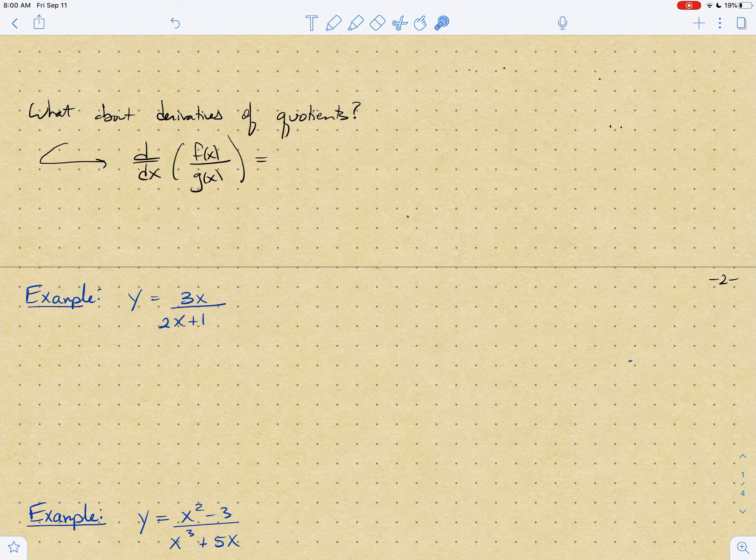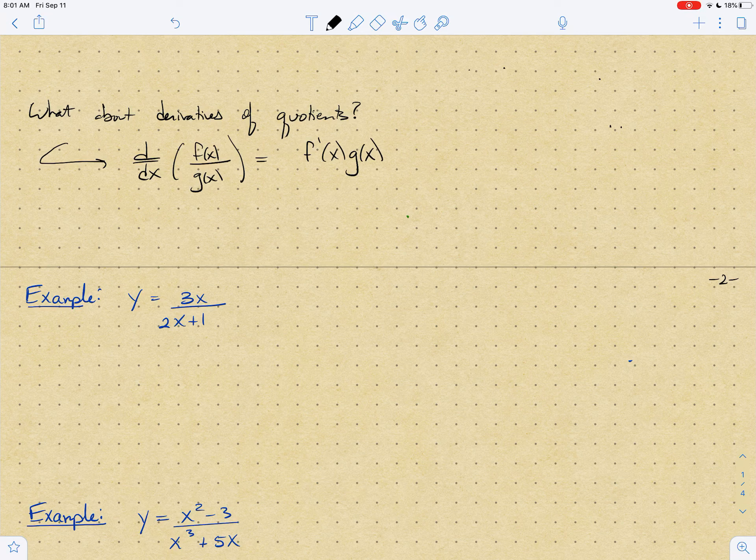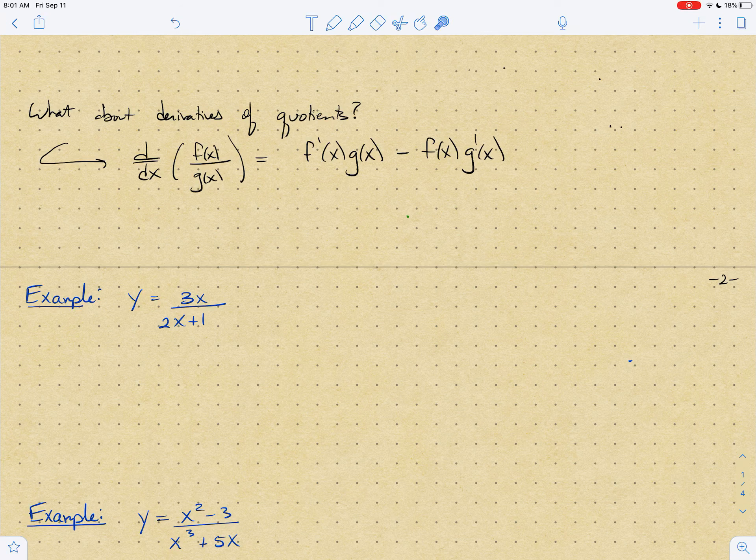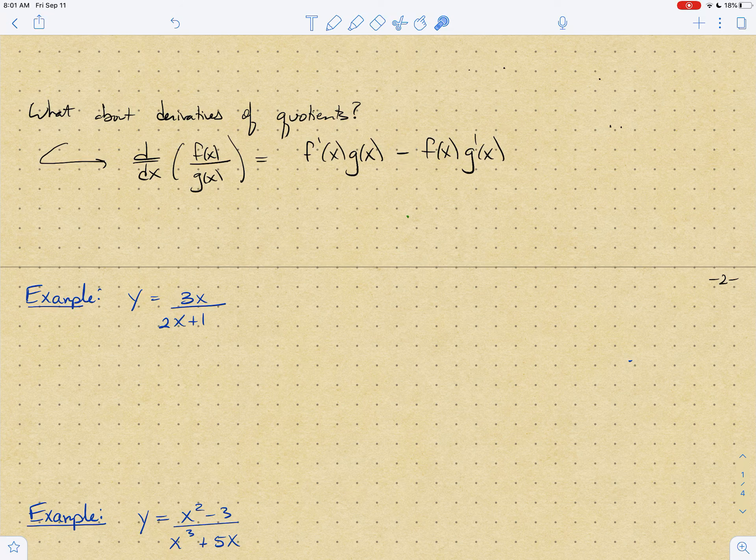It's kind of like the product rule, but some weird stuff happens. Here's the formula: you get f prime of x times g of x minus f of x g prime of x. That's almost exactly the product rule the way we wrote it. You just put a minus instead of a plus.